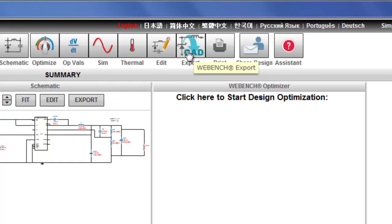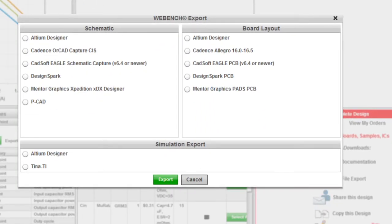The final WebBench Advanced Power Feature I'll show you today is CAD Export, which lets you get your power subsystem created and integrated into your system quickly. Once you've finalized your design, you can use the WebBench Export tool.